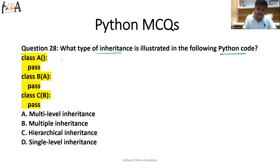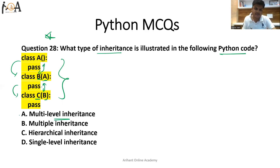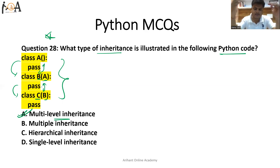Question 28: what type of inheritance is illustrated in the following Python code? Class A is described, then class B is derived from A, and then class C is derived from B, which is already derived from A. This is called multi-level inheritance — a subclass is derived from a parent class which is itself derived from another class above it. So option A is the correct answer.